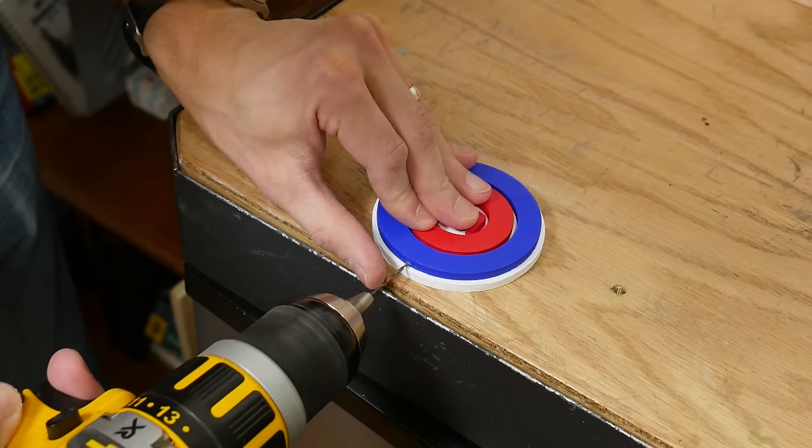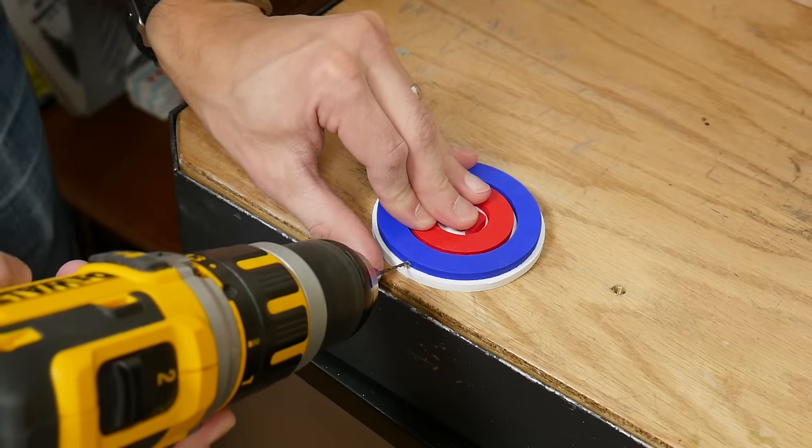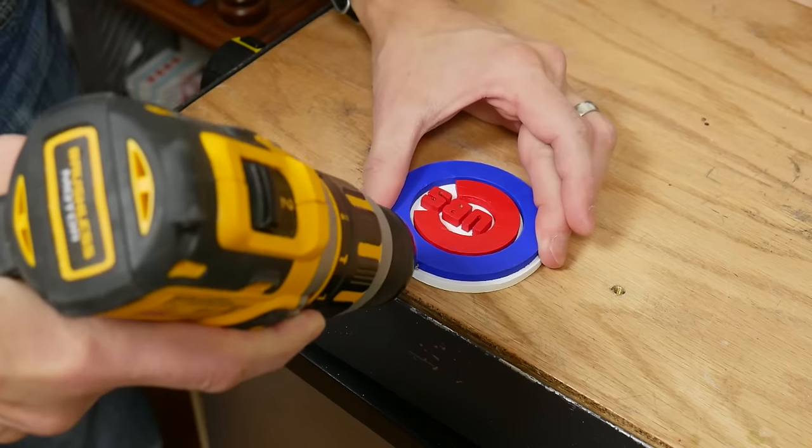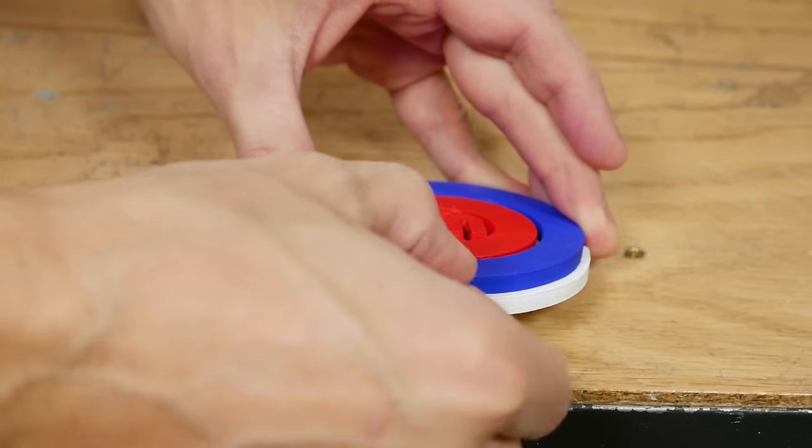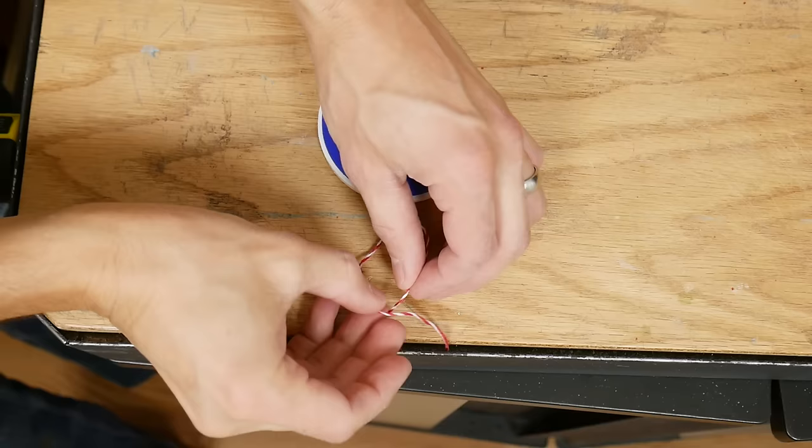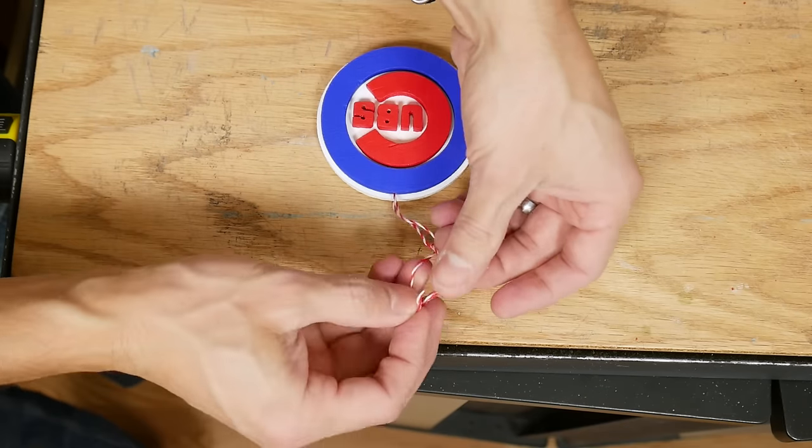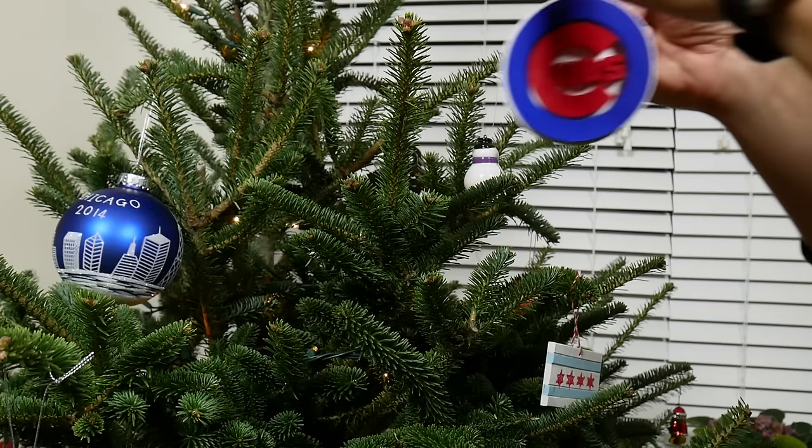After the glue had dried I drilled a small hole in the top of the ornament and tied on a piece of string. Then hung the ornament on our tree.